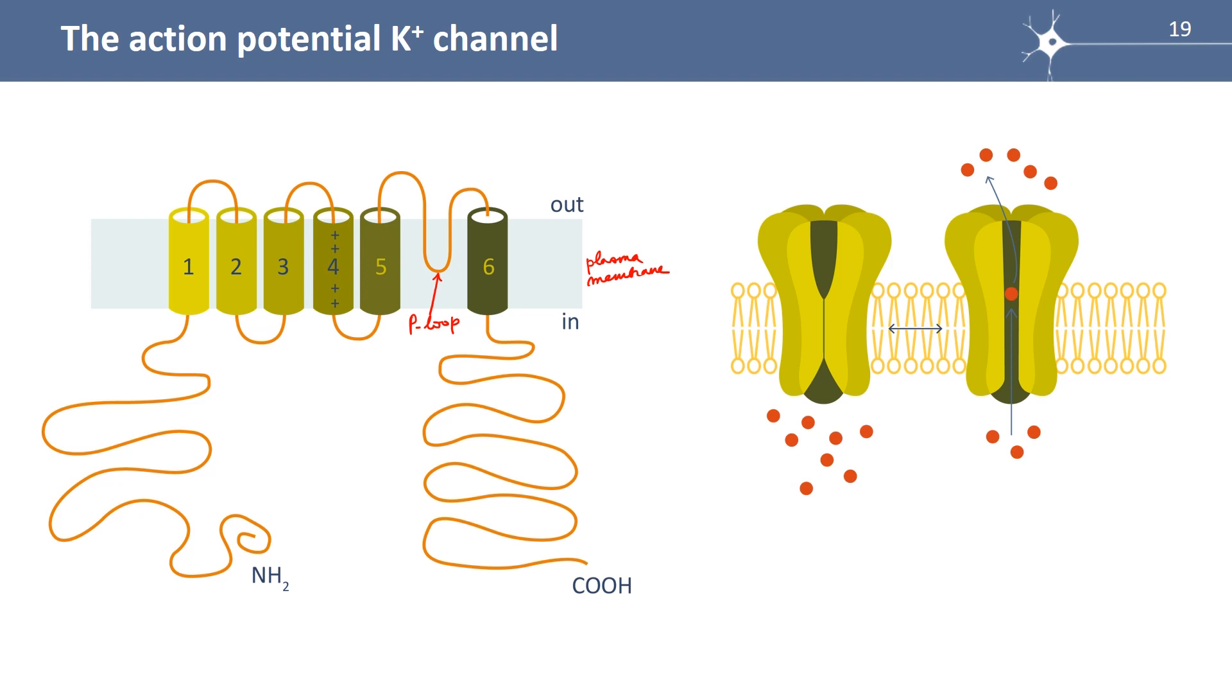But it's quite different from the sodium channel because you have only one domain. So to get the potassium channels, you need four of these subunits. Here, for example, you see the channel one, two, three, four of these subunits that fall together to make a central pore. And when the membrane is depolarized, the pore opens and potassium ions exit the cell.